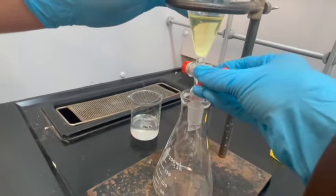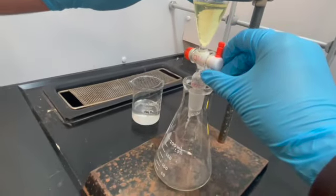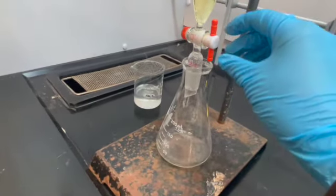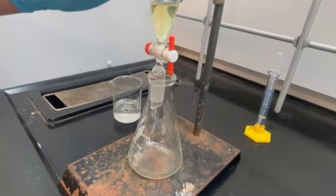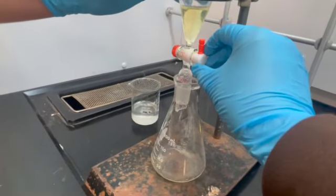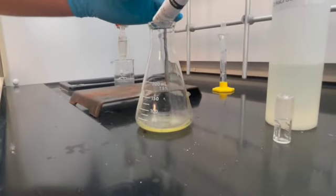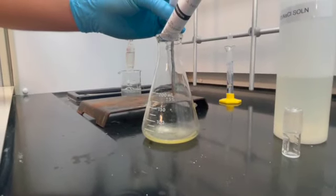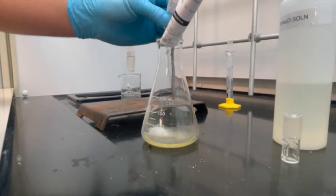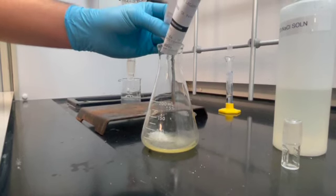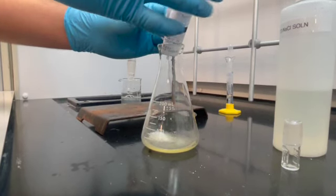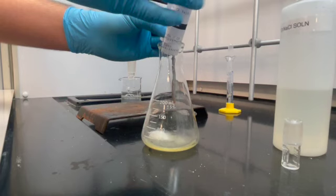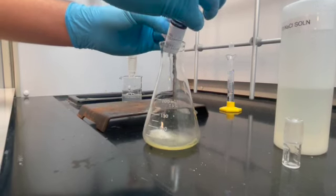We are taking our organic layer and putting it into an Erlenmeyer flask. Now we are adding the solid magnesium sulfate to our organic layer, then we are going to stir it with a stirring rod. We used around 3.002 grams of the magnesium sulfate.